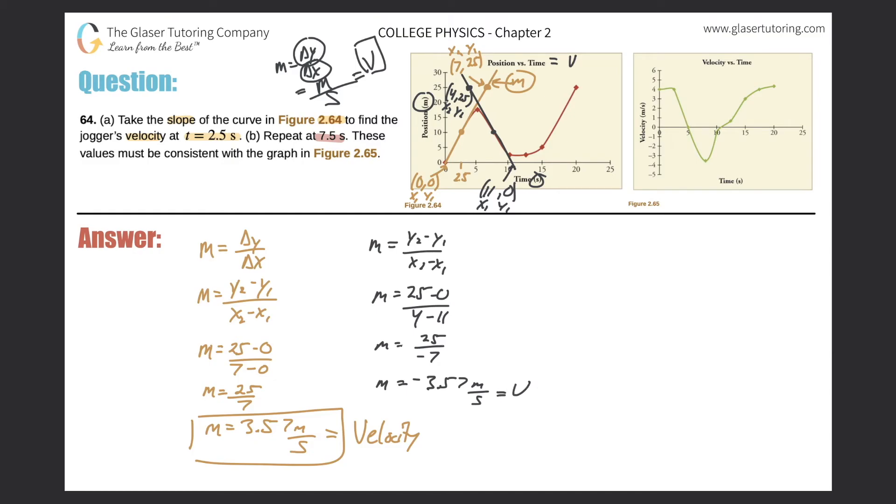Now it's negative because the slope is decreasing. So the velocity is going down, which definitely makes sense. So now what they want us to do is make sure that at the end of the question it says make sure these values must be consistent with the graph over here. So because now this is the velocity versus time graph.